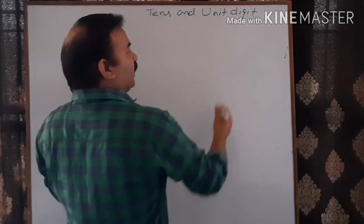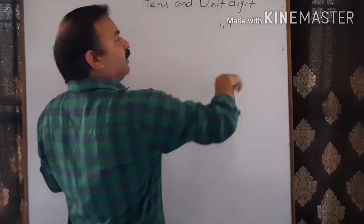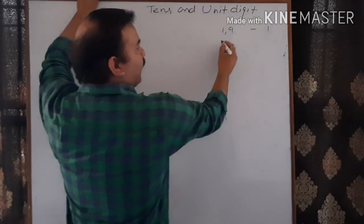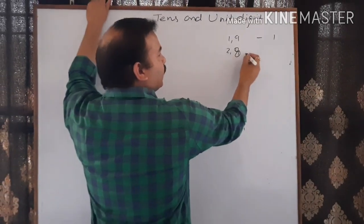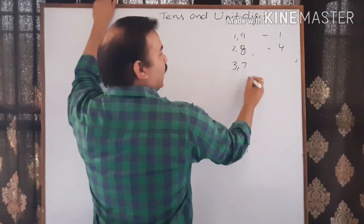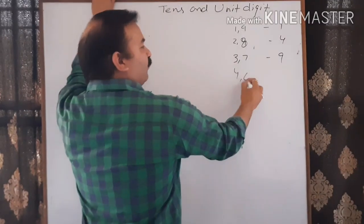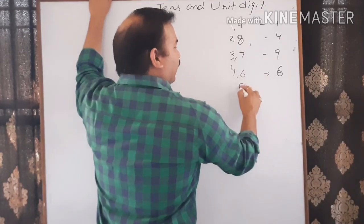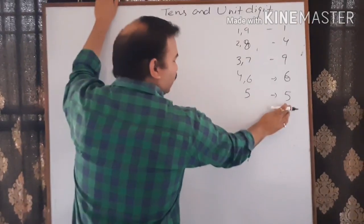If any number ends with 1 or 9, its square will have a unit digit of 1. A number ending with 2 or 8 will have a unit digit of 4 in its square. A number ending with 3 or 7 will have a unit digit of 9. A number ending with 4 or 6 will have a unit digit of 6. A number ending with 5, when squared, will have a unit digit of 5.